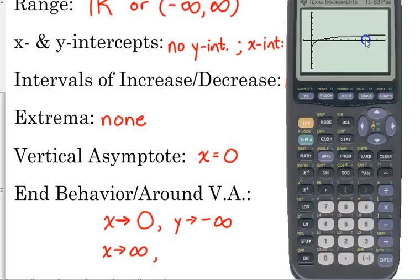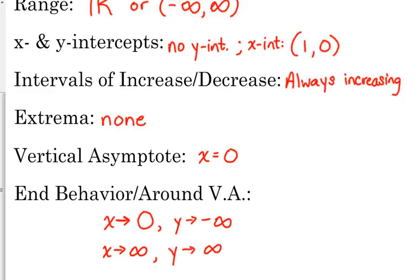As we approach positive infinity, as our x-values are going to the right, our y-values, they don't really look like it, but they do continue to increase, so our y-values are also going towards positive infinity. They are continuing to increase, however slowly that may be.